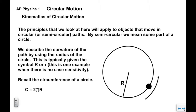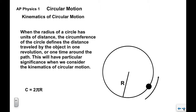We describe the curvature of the path by using the radius of the circle, typically given the symbol R — uppercase or lowercase, there is no case sensitivity here. You will recall the circumference of a circle: C = 2πR. When the radius has units of distance, the circumference defines the distance traveled by the object in one revolution. So in one revolution, the object traverses a distance equal to the circumference: 2πR.